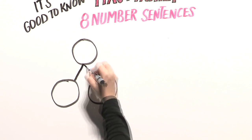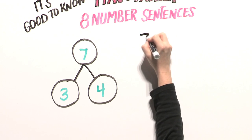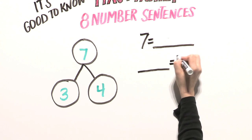Number bonds help your child see math facts and fact families. They can help show that the equal sign can be at the beginning or at the end of the number sentence.